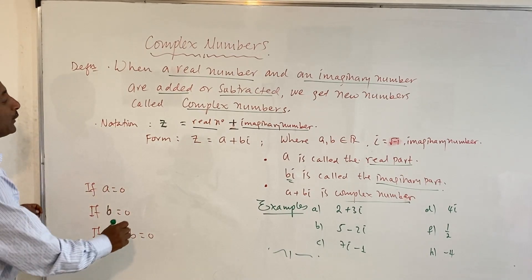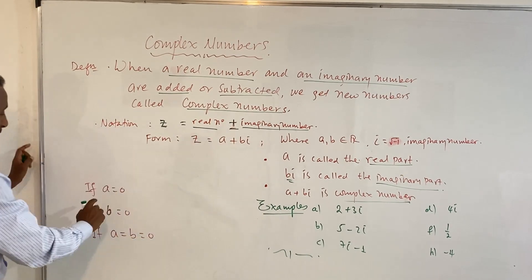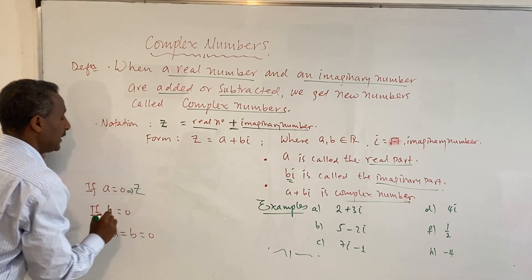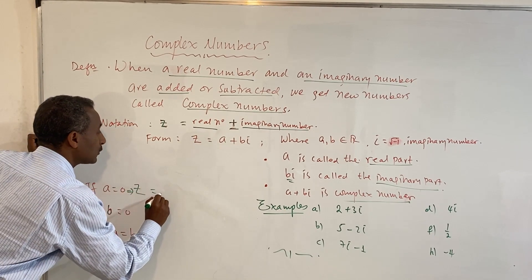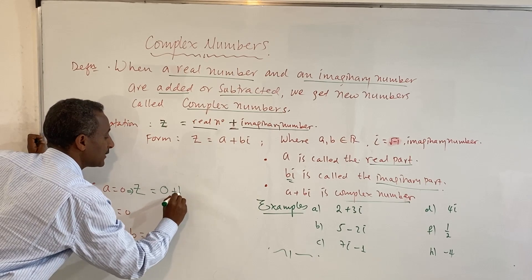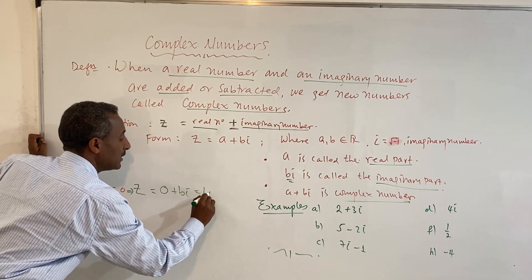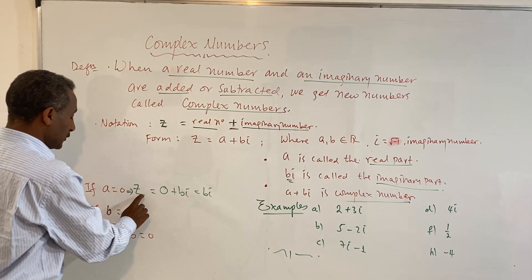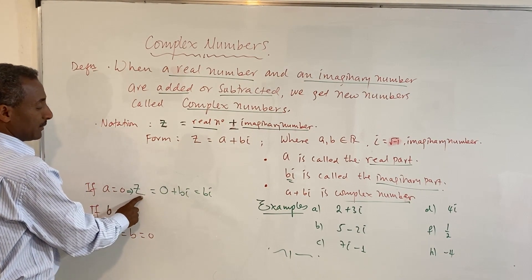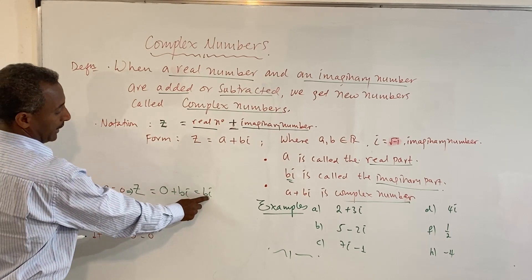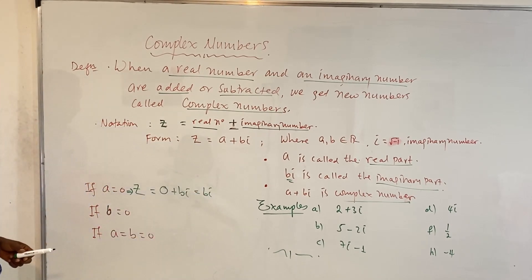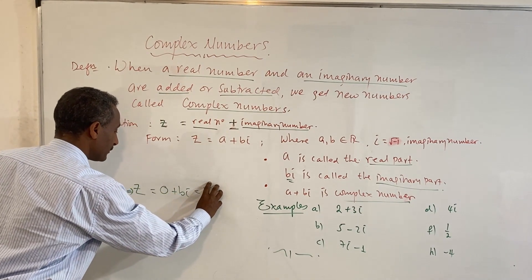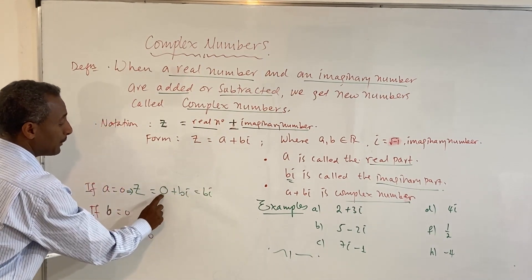What would happen to Z if A is zero? If the real part is zero, Z is equal to zero plus Bi. The imaginary numbers are what remain when the real part is zero.